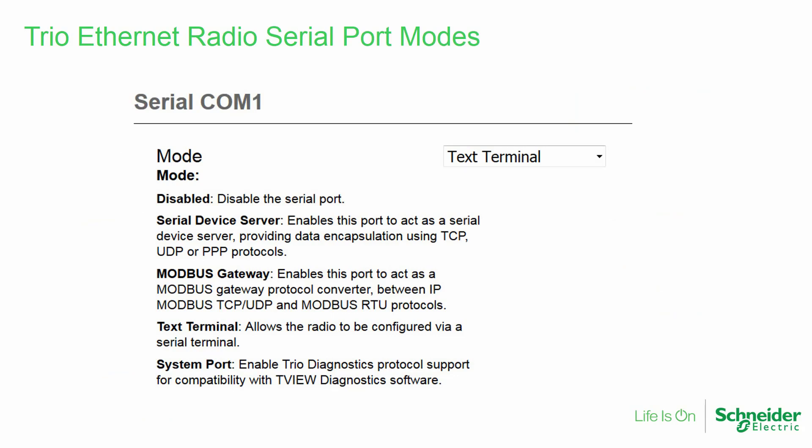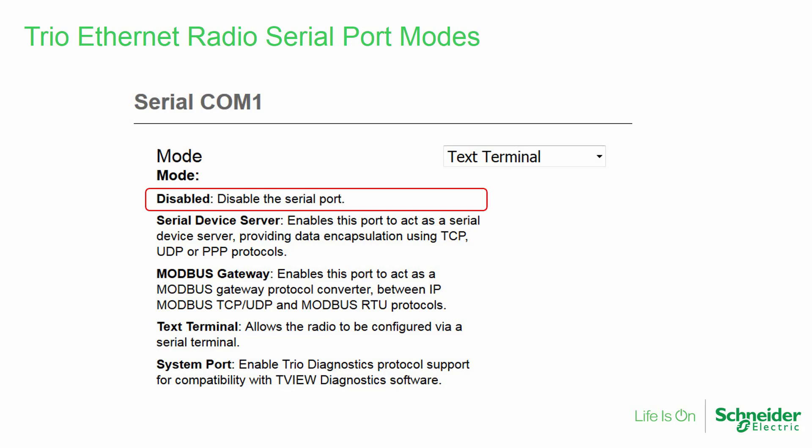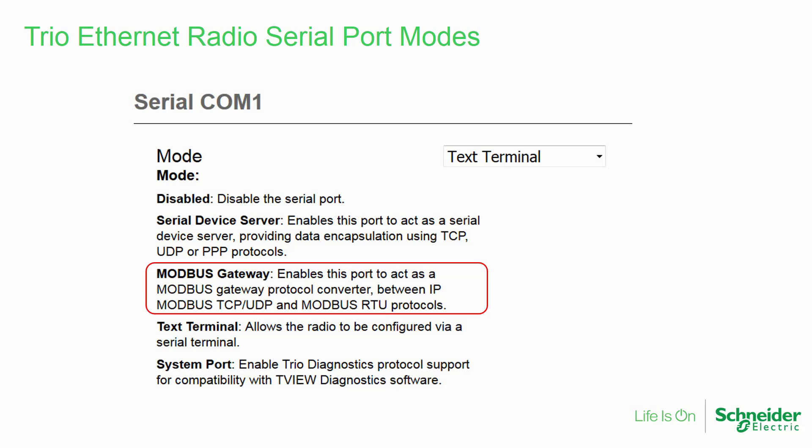Here is the serial COM1 port setup of the Q data radio. The default mode of COM port 1 is text terminal. In this mode, the radio may be configured or diagnostic testing may be performed using a simple terminal program such as HyperTerminal using 19200 8N1, no handshaking. If not required, this port may be disabled. The port may be configured as a serial device server, which we will discuss in more detail on the next slide. The Modbus gateway may instead be chosen, and will also be discussed in more detail.